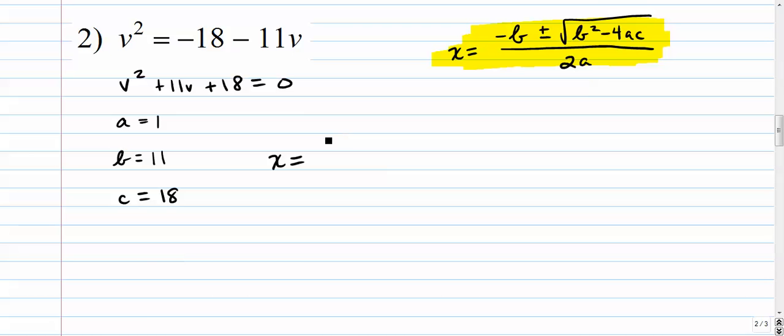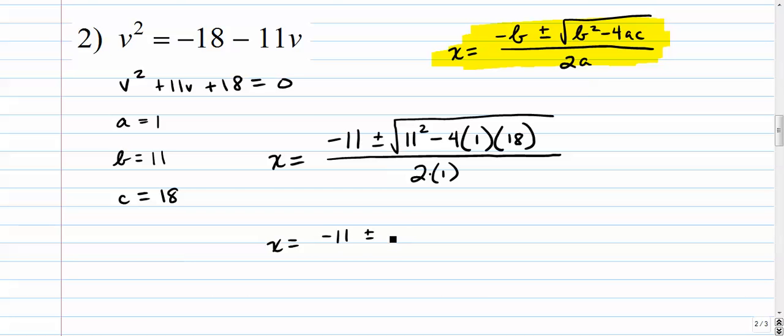So the quadratic formula is negative b, so it's negative 11, plus or minus square root of b squared, 11 squared, minus 4 times a times c. All divided by 2 times a. Simplify. 11 squared is 121, minus, let's see, 4 times 3 times 18 is 72, all over 2.